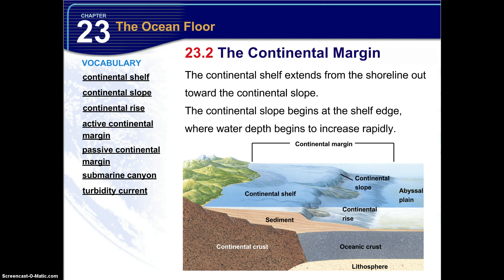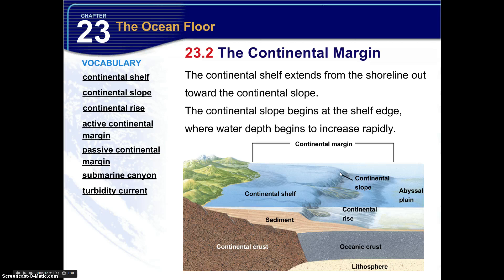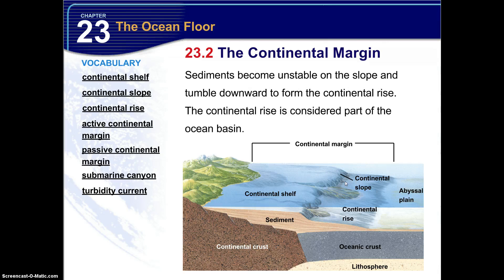Now the continental shelf extends from the shoreline out towards the continental slope. So from this line right here, we see the coast or the shoreline, and it goes out, and the shelf extends until this intense decrease in depth. So the continental slope begins at the shelf edge, where the water depth begins to increase rapidly. Sediments become unstable on the slope and tumble downward to form the continental rise, this area right in here.